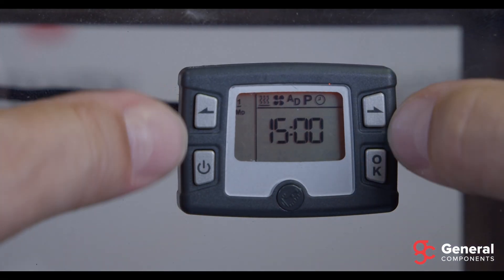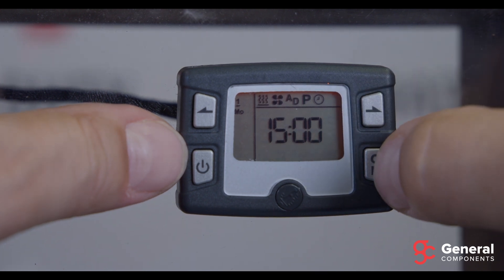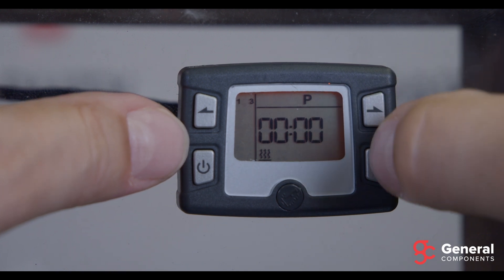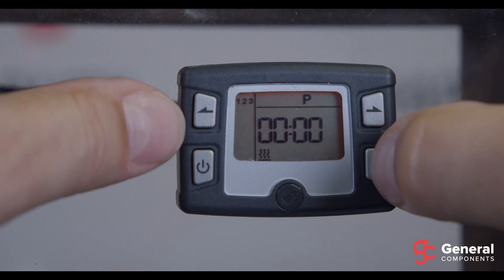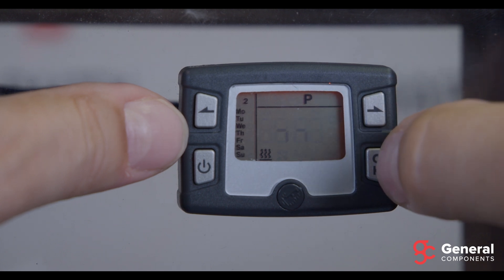To set another program, just repeat the same steps. Navigate to the P icon, hit OK, select program number 2 this time, and you'll repeat the same steps as program number 1. So hit OK, turn on program number 2.